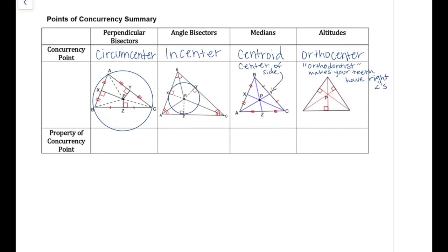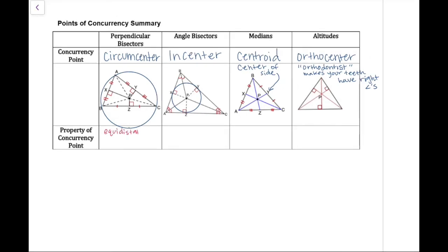So the circumcenter, the property is it's equidistant from the vertices. That's why we have the circle. And the incenter, it's equidistant from the sides, which is why we have a circle inside. The centroid is the two-thirds, one-third. It's also your center of gravity. And there's not really a whole lot of properties on the orthocenter.